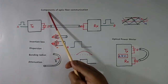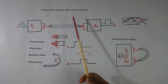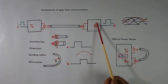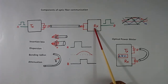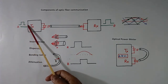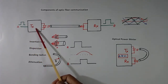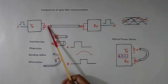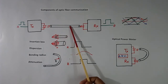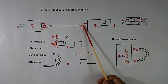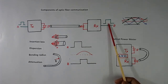Now, the components of optic fiber communication. There will be one transmitter, one receiver, and one optical cable. We give an electrical signal to the transmitter, which converts it into an optical signal. This optical signal travels through the cable, and the receiver converts it back into an electrical signal.